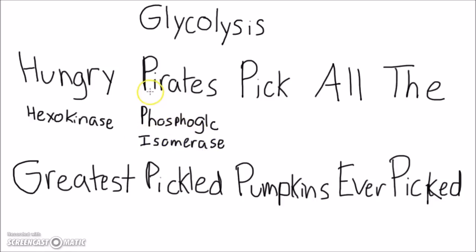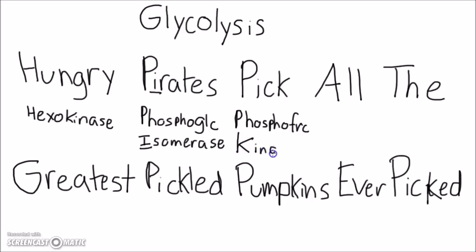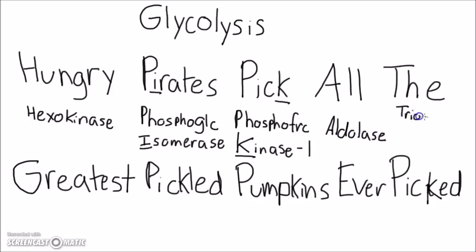Because there are a lot of P enzymes, each mnemonic word corresponds with whether it's an isomerase, a kinase, or a mutase. So 'Pirates' has an I, so it's phosphoglucose isomerase. 'Pick' has a K, so it's phosphofructose kinase. 'All' — aldolase.